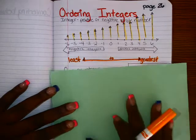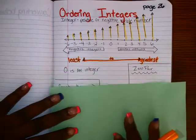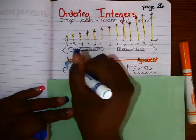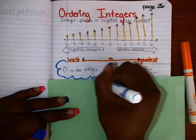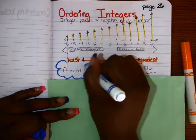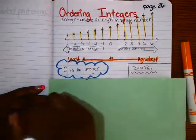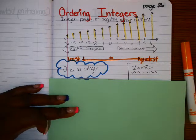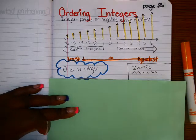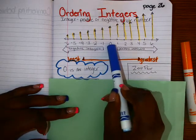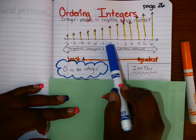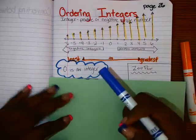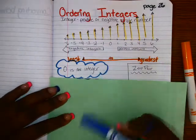One thing you should understand is that zero is an integer. Zero is not a positive or negative — it's just an integer. And it is a place value because there has to be some kind of distance between negative one and one. So zero is an integer.